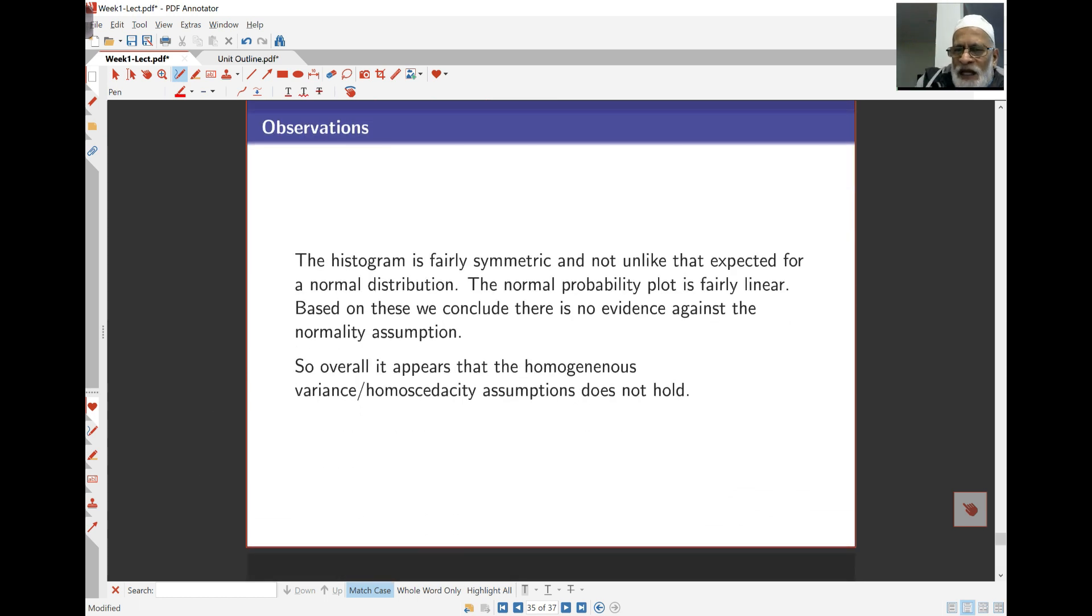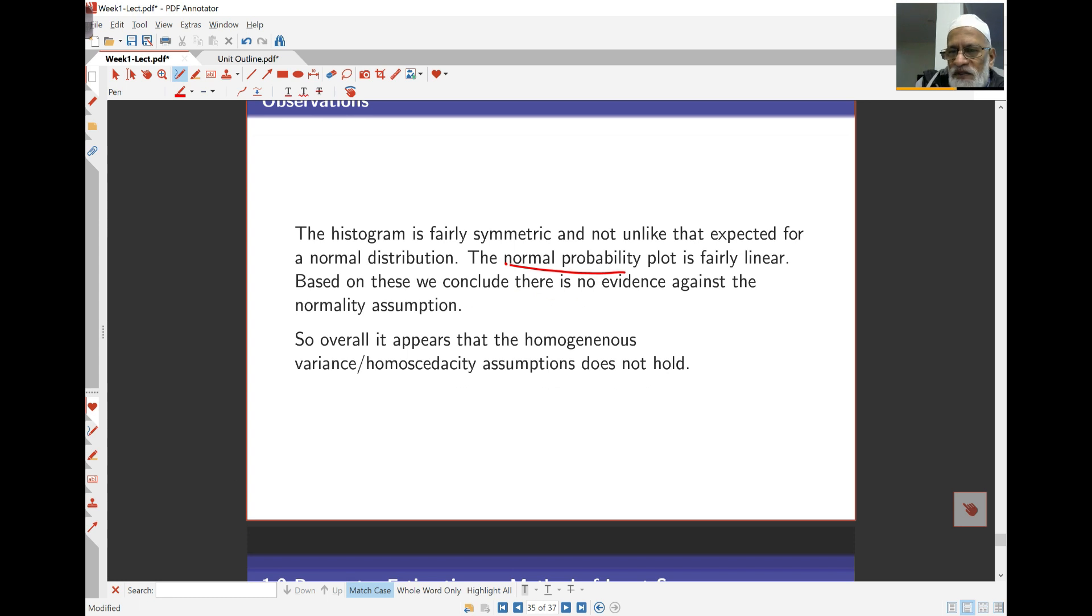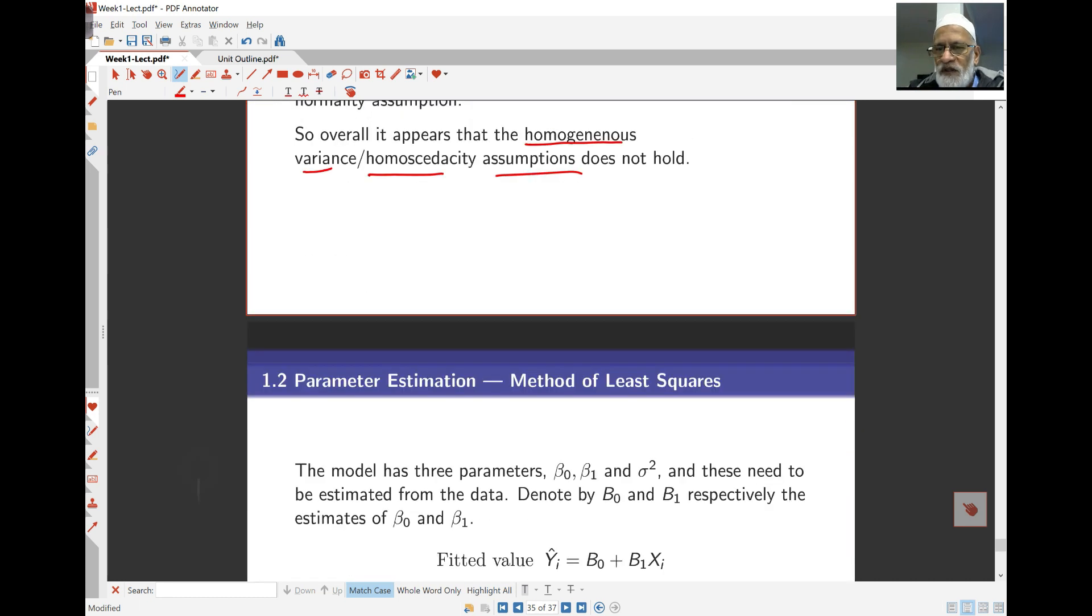So, based on both of these plots over here, I say that it looks that normal probability plot is fairly straight line. Histogram is not too different from what is expected for a normal distribution. But overall, it seems like what we said the homogeneous variance, or sometimes called homoscedastic assumption, is the one that doesn't hold. That seems the major problem over here.